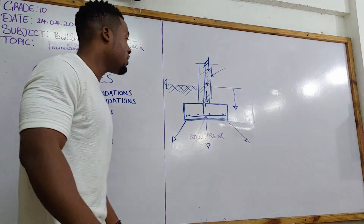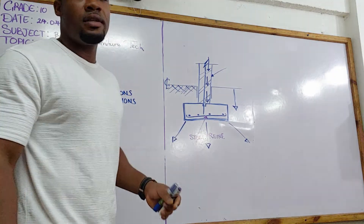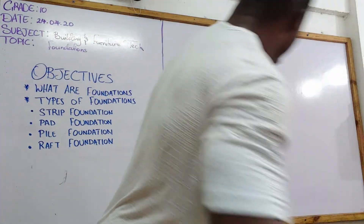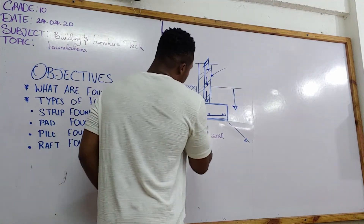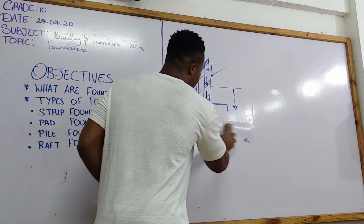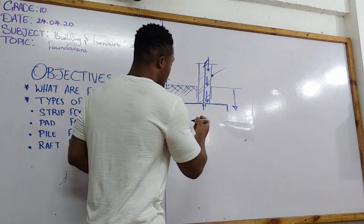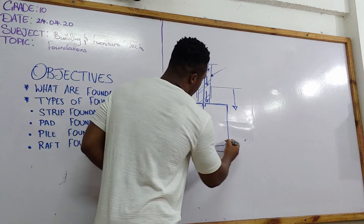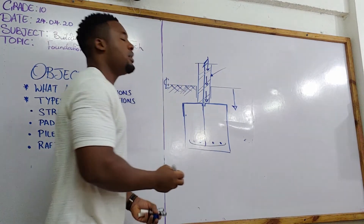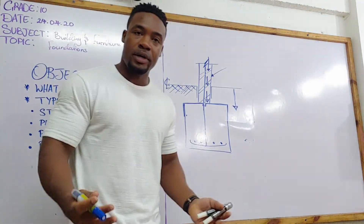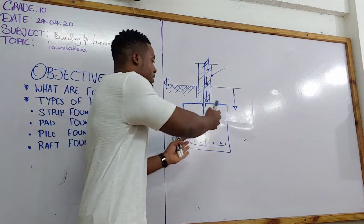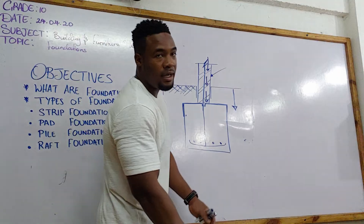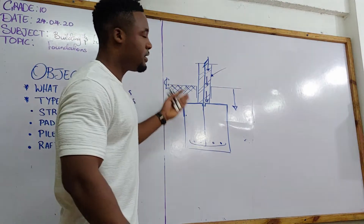There are two variations of the strip foundation: the regular or standard strip foundation and the deep strip foundation. With the deep strip foundation, the footing goes much deeper. This results in the foundation having a much higher capacity for bearing and distributing load, because as the deep strip foundation goes deeper it reaches stronger and more stable subsoil beneath the ground level.